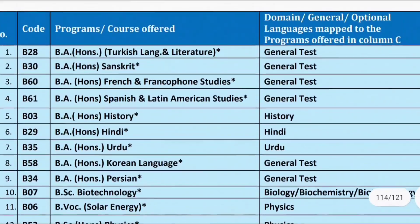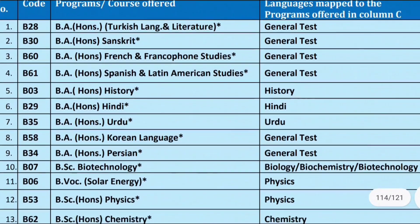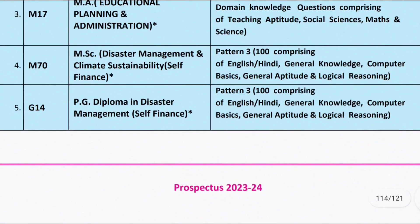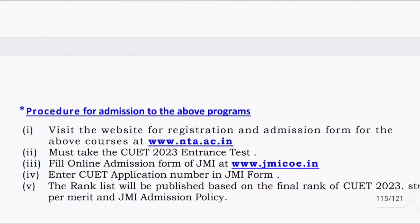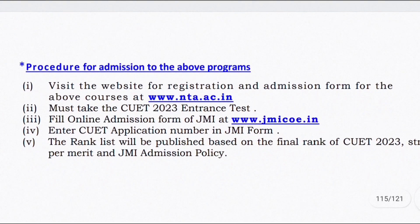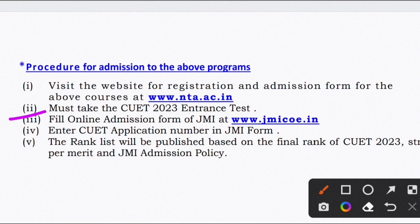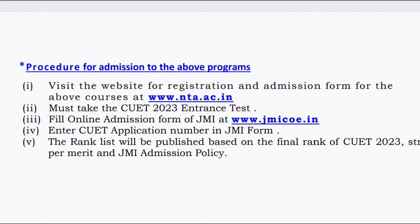I will add a course list so you can see both UG and PG courses clearly. Now, regarding the admission procedure — first of all, you have to visit the NTA website at www.nta.ac.in and fill in and appear for the CUET entrance test, because admission will not be given on a merit basis without the entrance test.